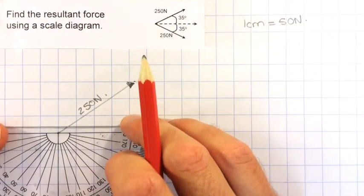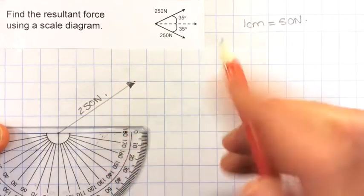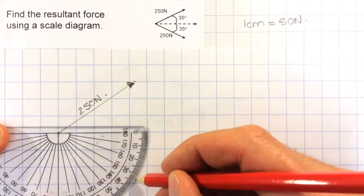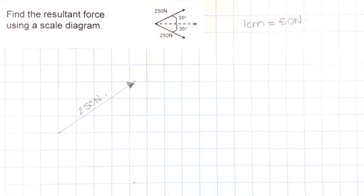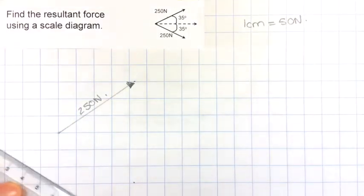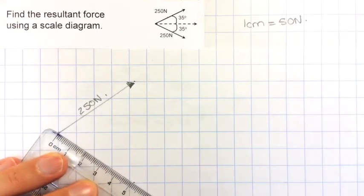Then I need to do the same thing for this one. Pop my protractor there, make sure it's carefully lined up, and mark in my 35 degrees. Once again, it's going to be 5 cm long, so line it up.